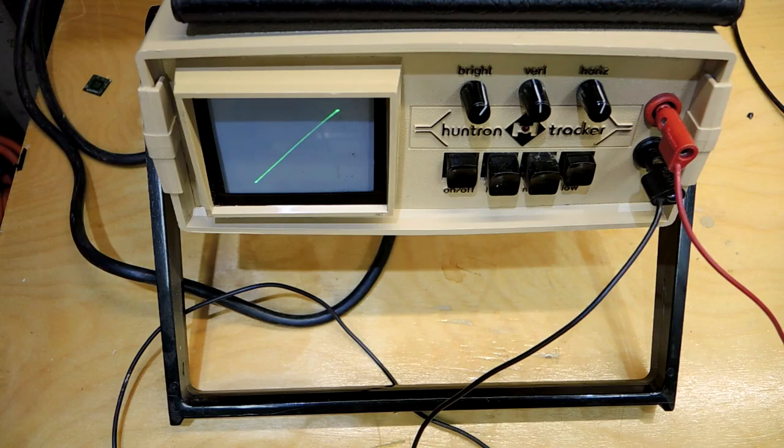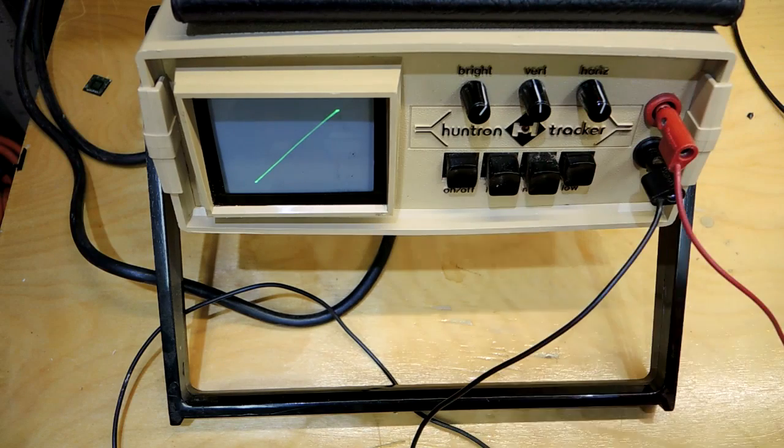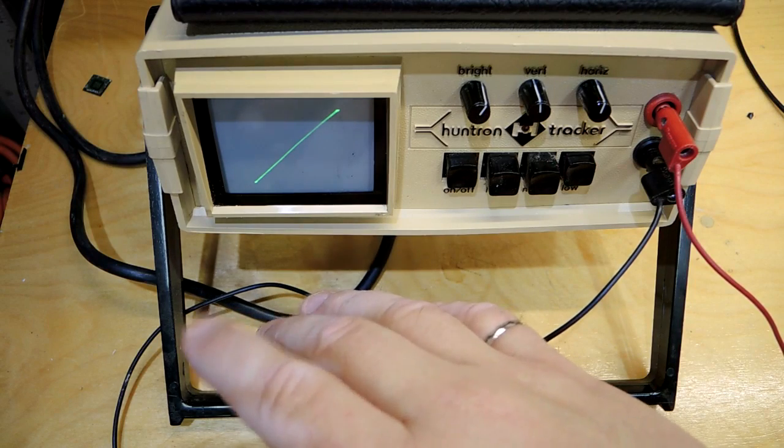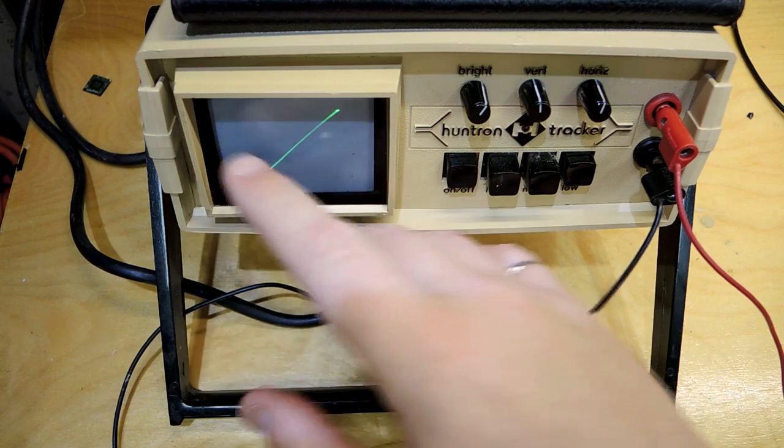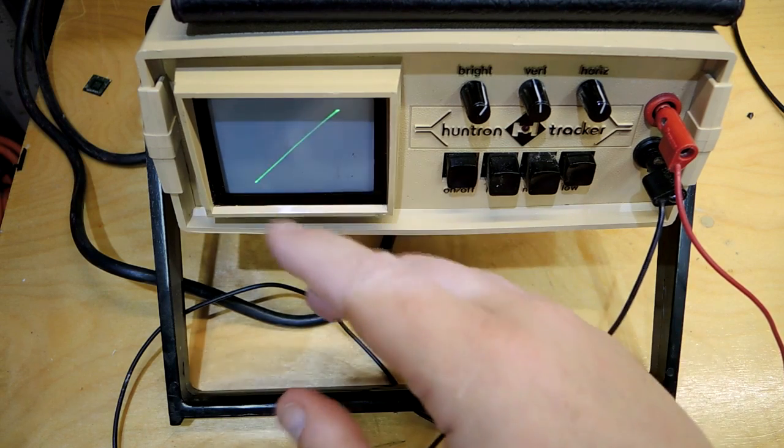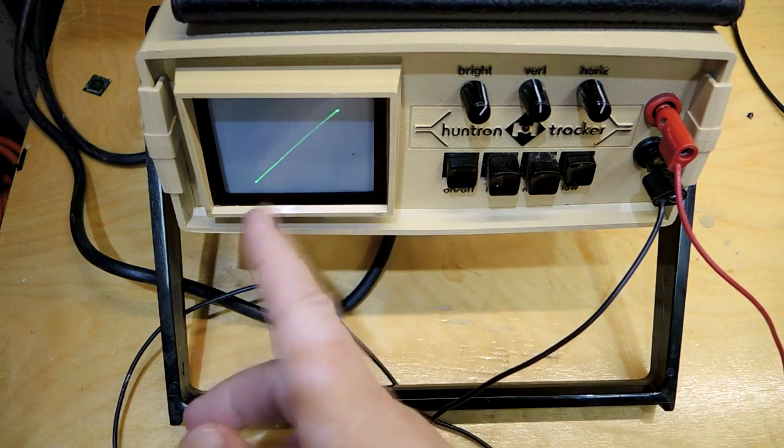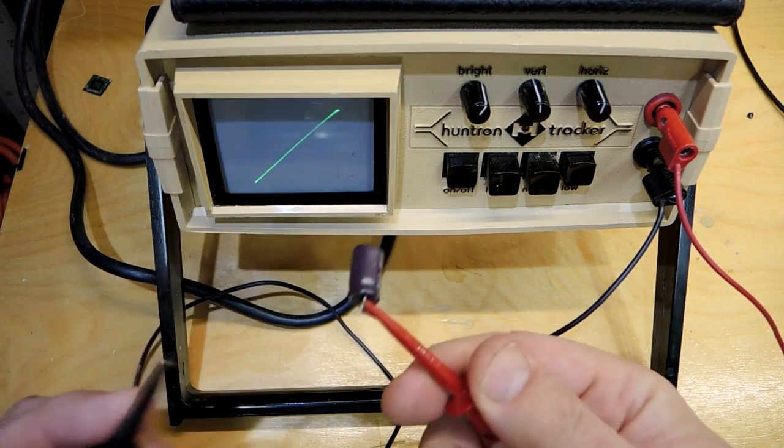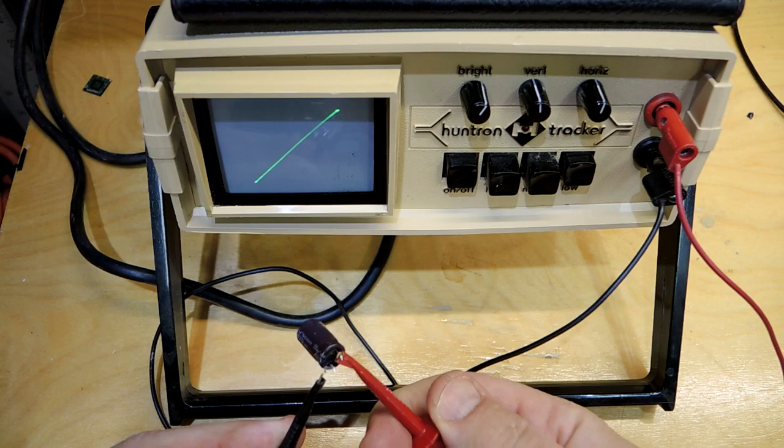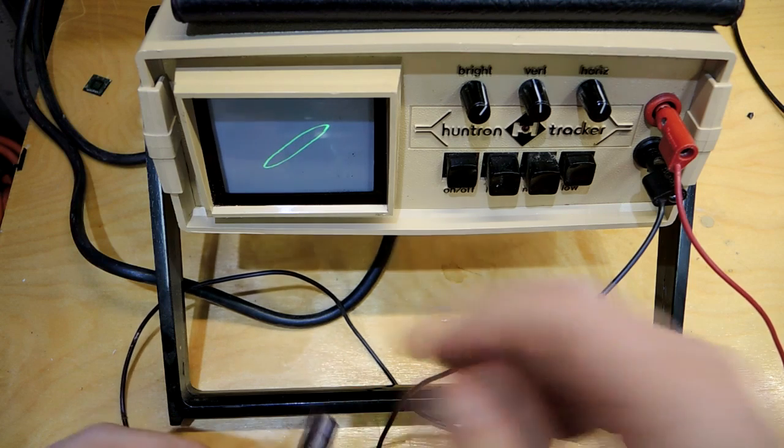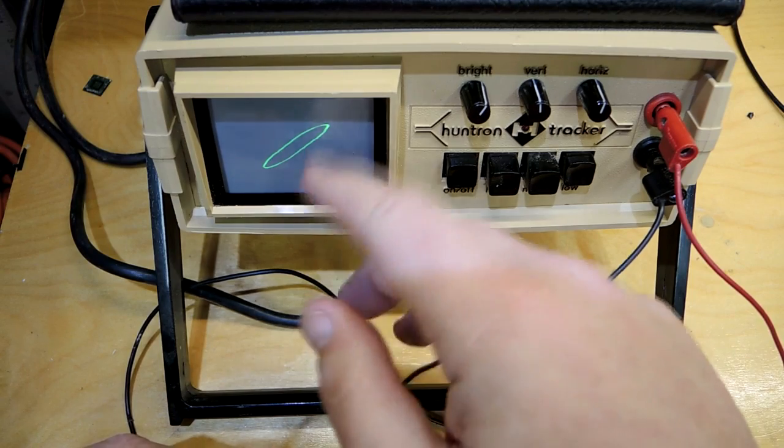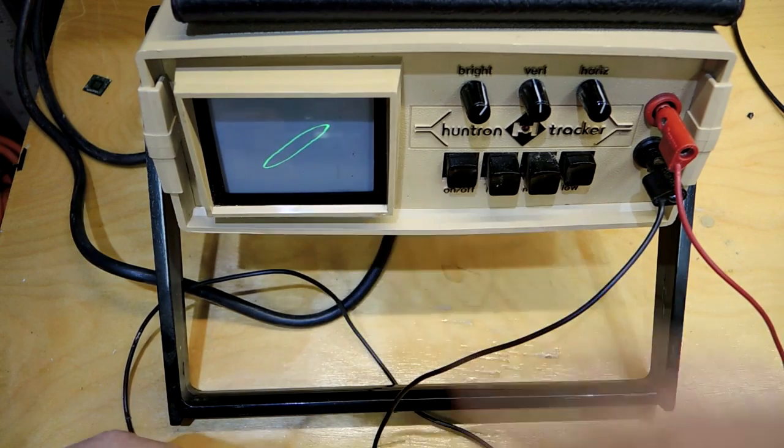Let's keep testing this component. I have a different instrument called the Huntron tracker, a fairly unusual bit of test equipment but it finds uses occasionally. It has voltage on one axis and current on the other. Right now it's just an open circuit. If I take the capacitor and attach it, I can see this pattern indicating fairly high internal resistance on this capacitance as well. If it's more of a capacitor it should be circular.